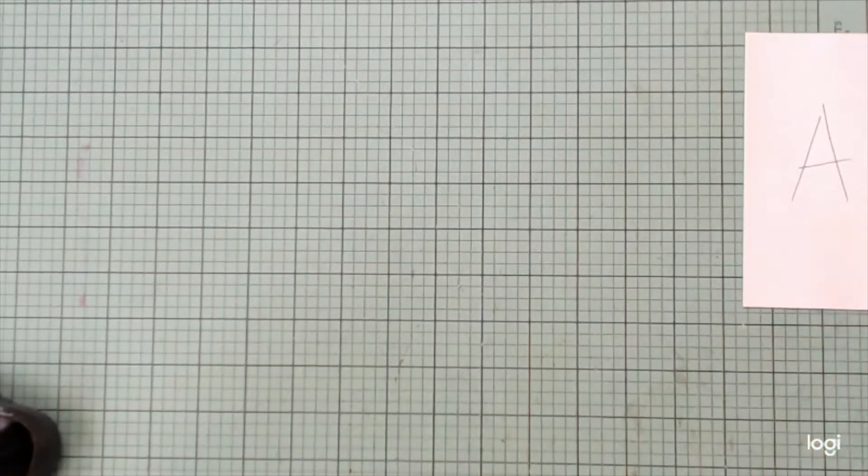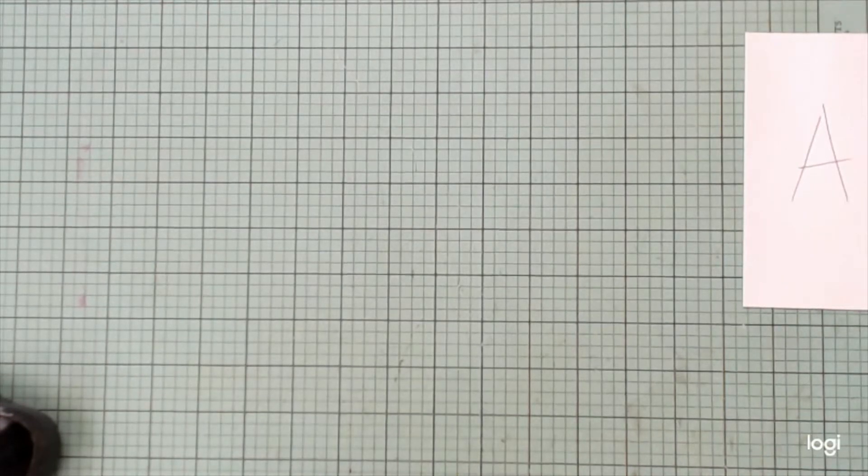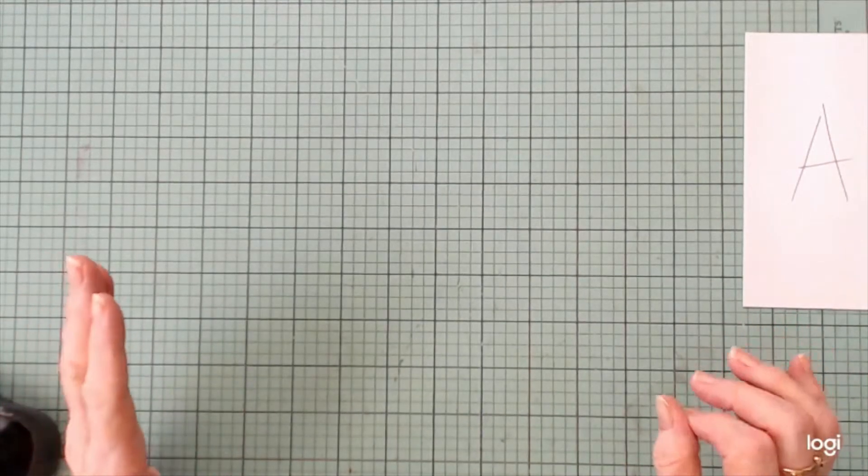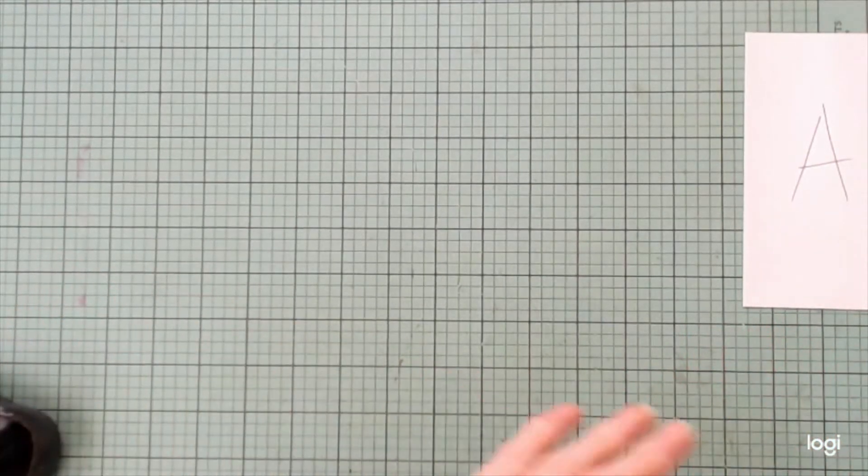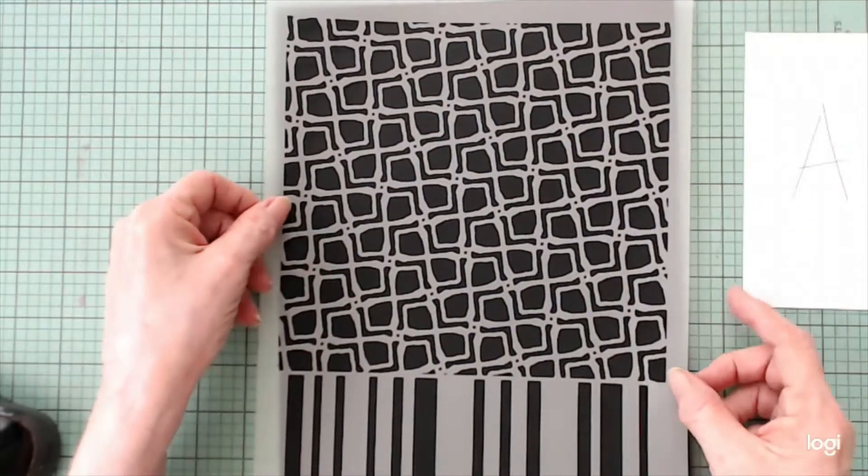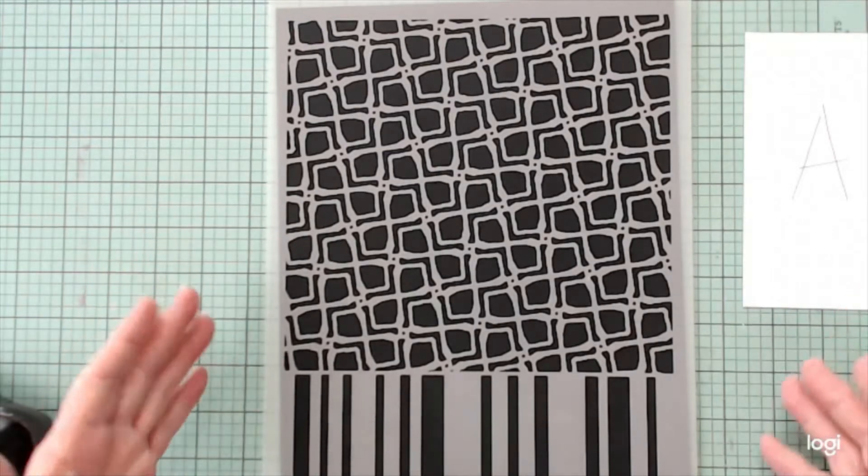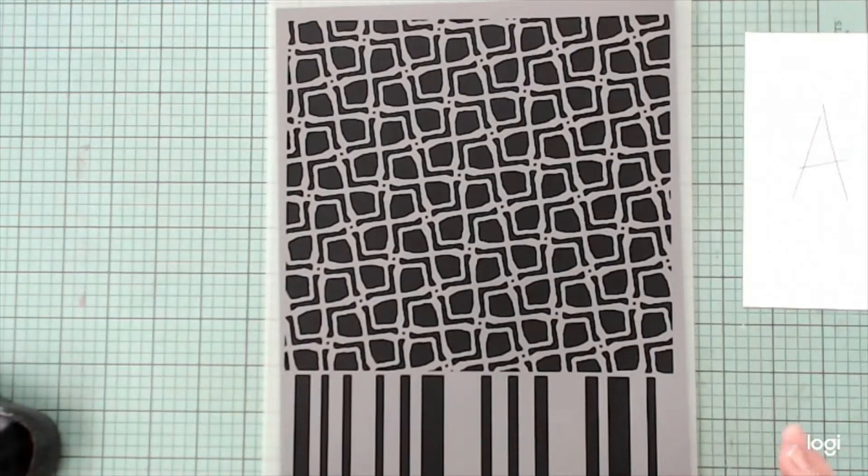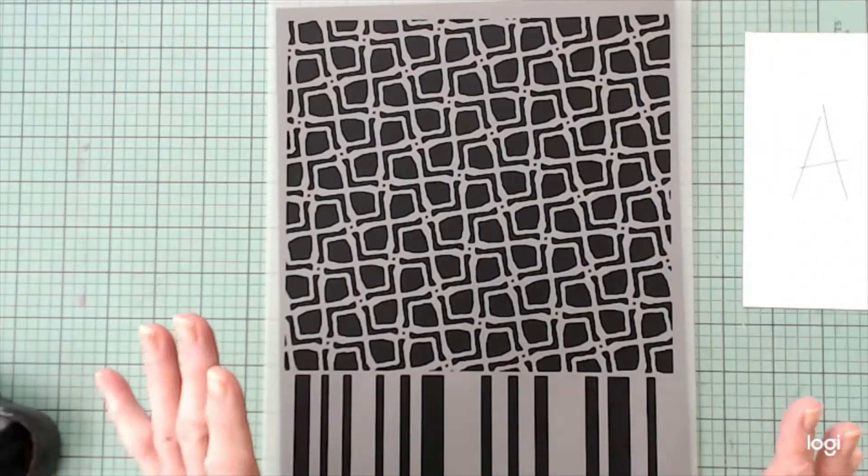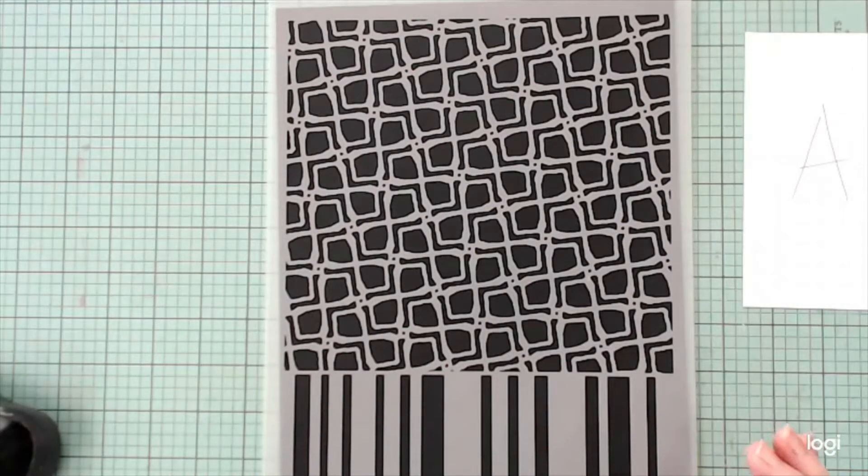In this set, you are actually getting 25 stencils. So there's a variety because I used to belong to the Stencil Girl Stencil Club. And each month you would get a large 9 by 12 stencil, one medium size which is roughly 6 by 6, and then one small one. And I was in their club forever and a day.